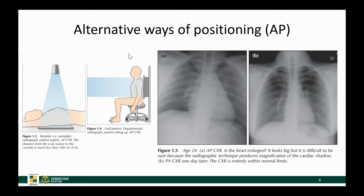Not all patients are able to stand up, so we need other techniques to image their chests. For supine patients, the x-ray source is in front of them and the detector is positioned behind the patient — these images are called AP images. They differ from the PA chest x-ray in that the distance between the x-ray source and the cassette is shorter, usually less than 6 feet or 180 centimeters.